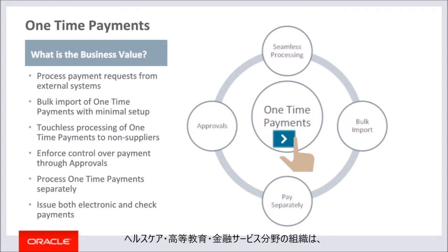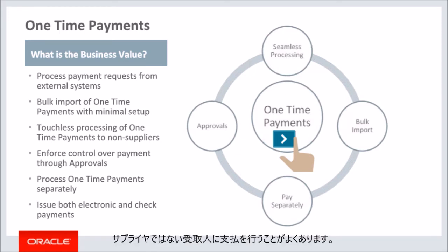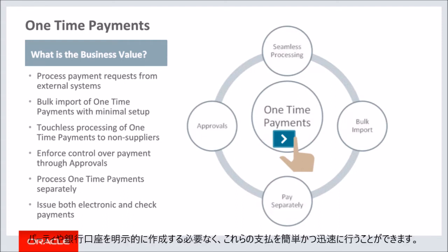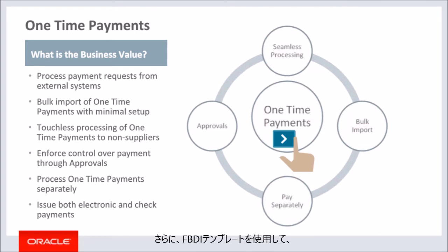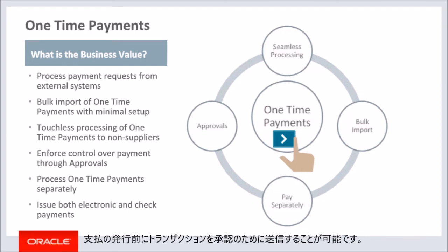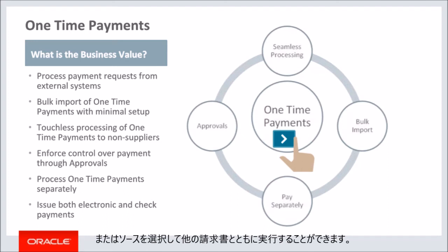Organizations in the healthcare, higher education, and financial services fields often make payments to payees who are not suppliers, such as payments for patient claims or student refunds. This feature provides a simple and quick way to make these payments without the need to create parties and bank accounts explicitly. Additionally, you can import these payments in bulk using an FBDI template. The transactions can be sent for approval before issuing payments. You can run the payment process request for one-time payment requests separately or with other invoices using source selection.